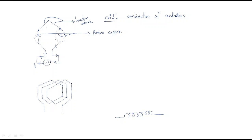The inactive copper area doesn't play a significant role in working the machine. Now, how many turns are available? From one point back to the same point is called one turn. So this coil consists of one turn.